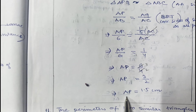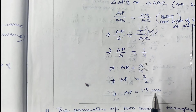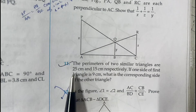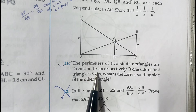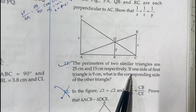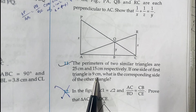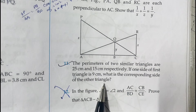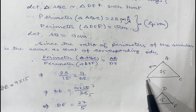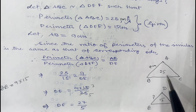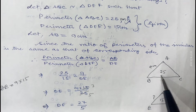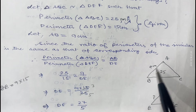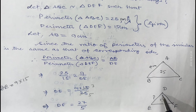Simplifying 6 by 4: cancelling by 2 gives 3 by 2, which equals 1.5. Therefore the required length of AP is 1.5 cm. Question number 10 is not in the syllabus. Question number 11: the perimeters of two similar triangles are 25 cm and 15 cm respectively. If one side of the first triangle is 9 cm, what is the corresponding side of the other triangle? Let triangles ABC and DEF be the two similar triangles, with AB equal to 9 cm, and we need to find DE.